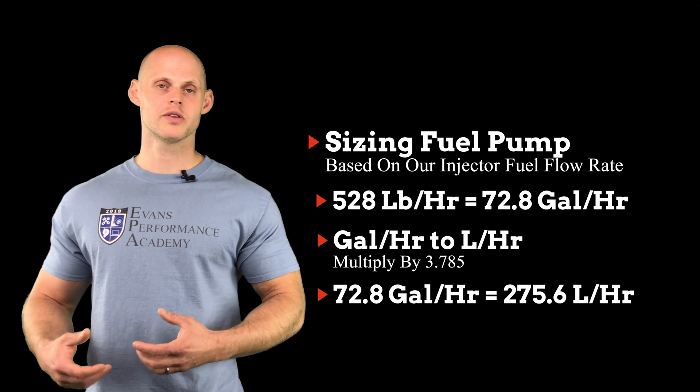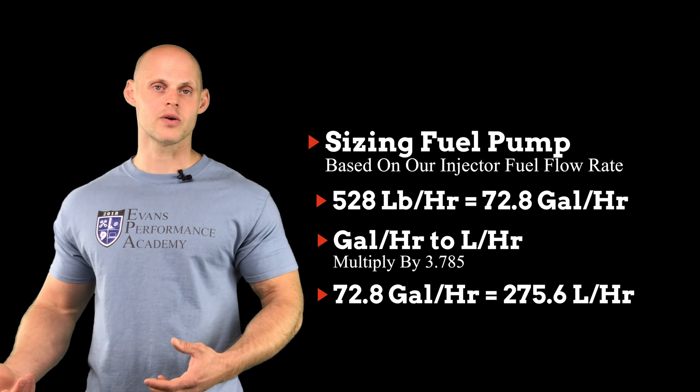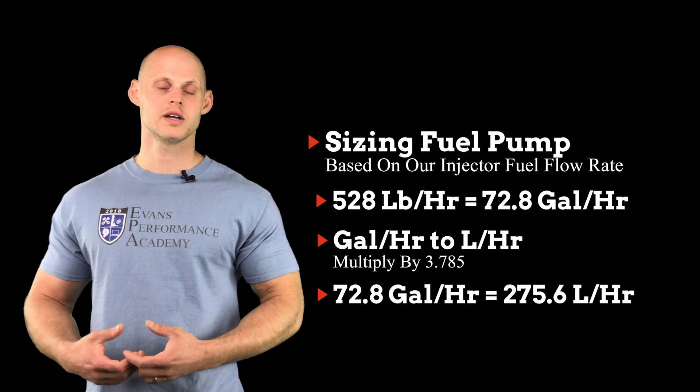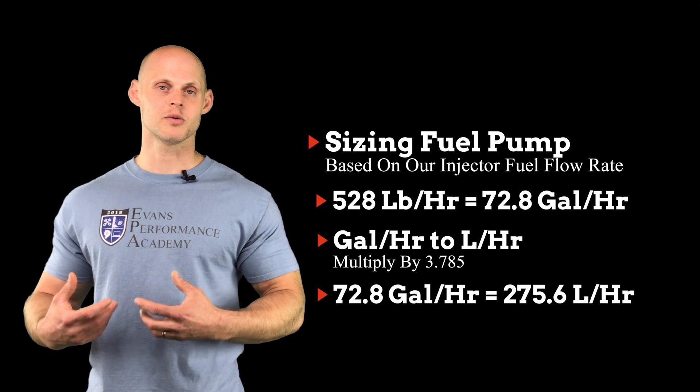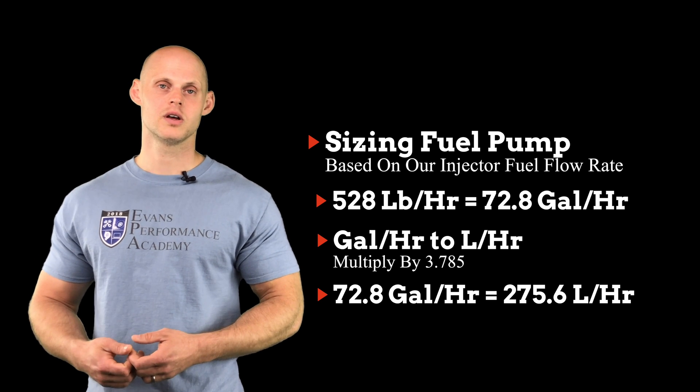So whether we have 72.8 gallons per hour or 275 liters per hour, it's the same exact flow rate from our pump, just in a different unit scale.